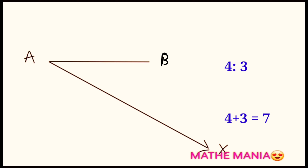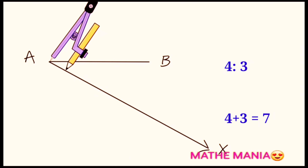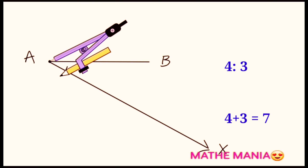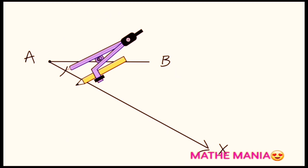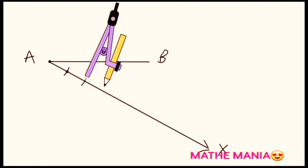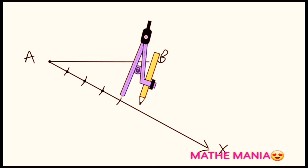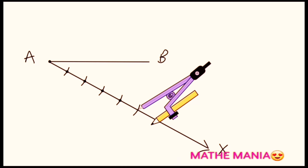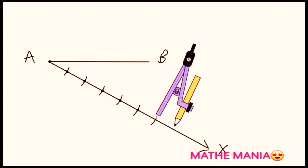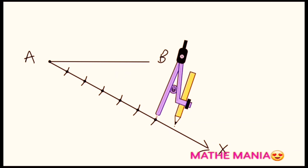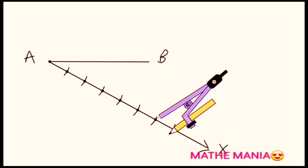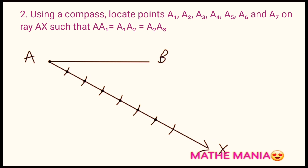We are going to divide ray AX into seven equal parts using our compass. Take a small radius on your compass and keep it on point A, then draw an arc intersecting ray AX at some point. Next, take this point of intersection as the center for drawing the next arc. Every time you take the next point of intersection as the center. In this manner we are going to draw a total of seven arcs, as 4 plus 3 equals seven. Now name the points of intersection of these arcs — I have named them A1, A2, A3, A4, etc.